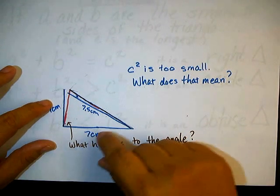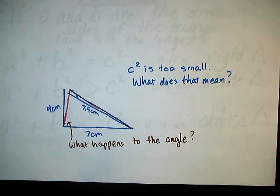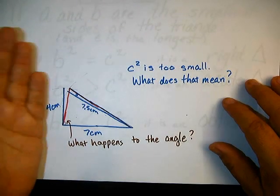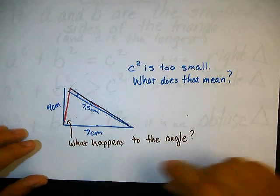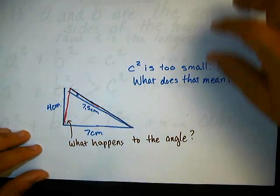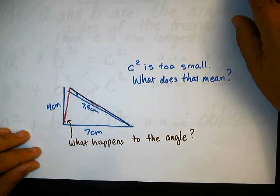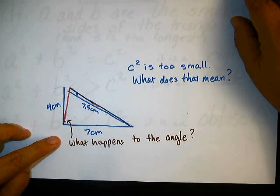So here's my drawing. I have a 4 cm, 7 cm, and 7.5. So I'm going to tilt the 4 cm in, tilt this one out so it matches just right, and what happened to the angle? Now it's less than 90 degrees, so this triangle is acute.